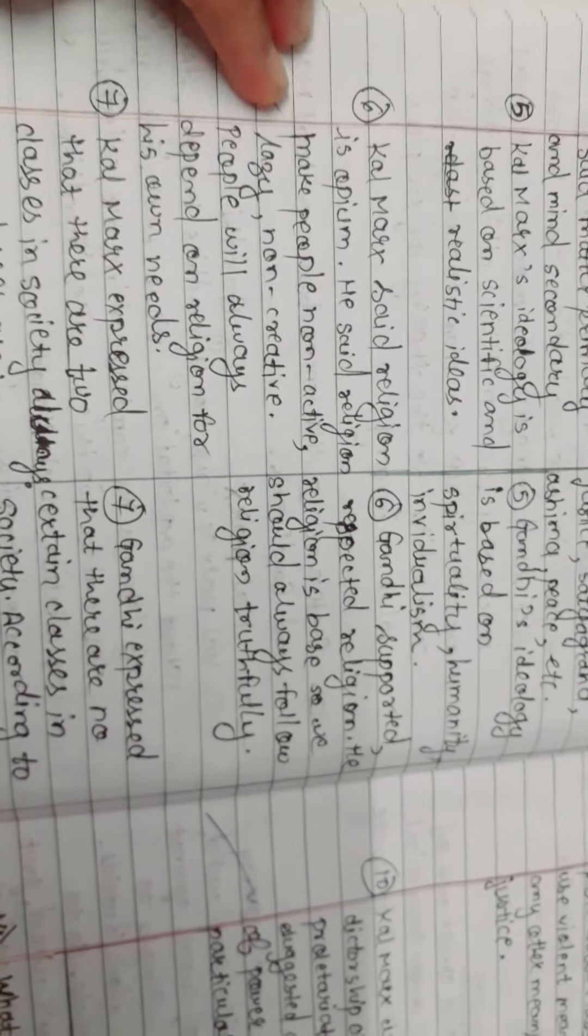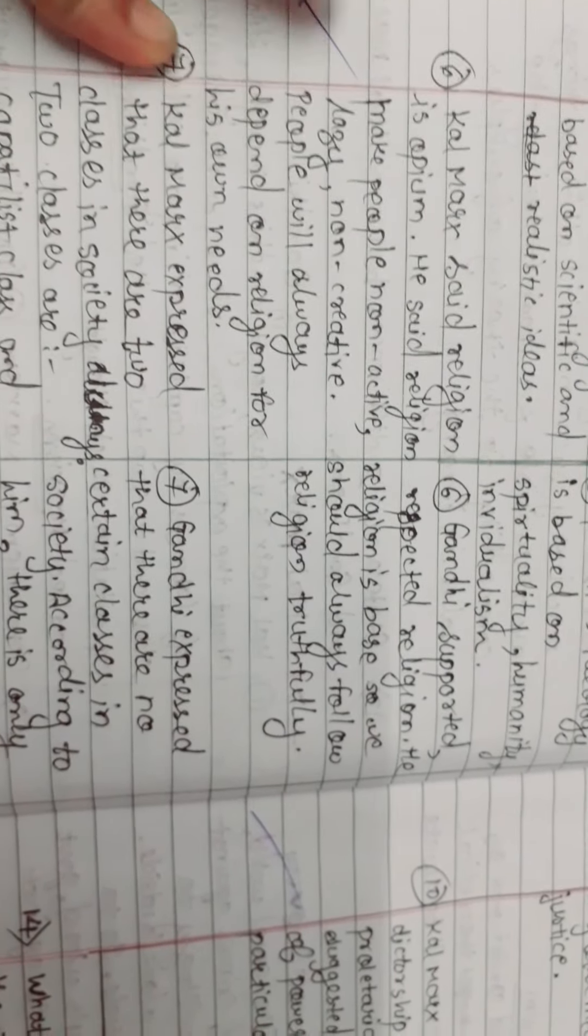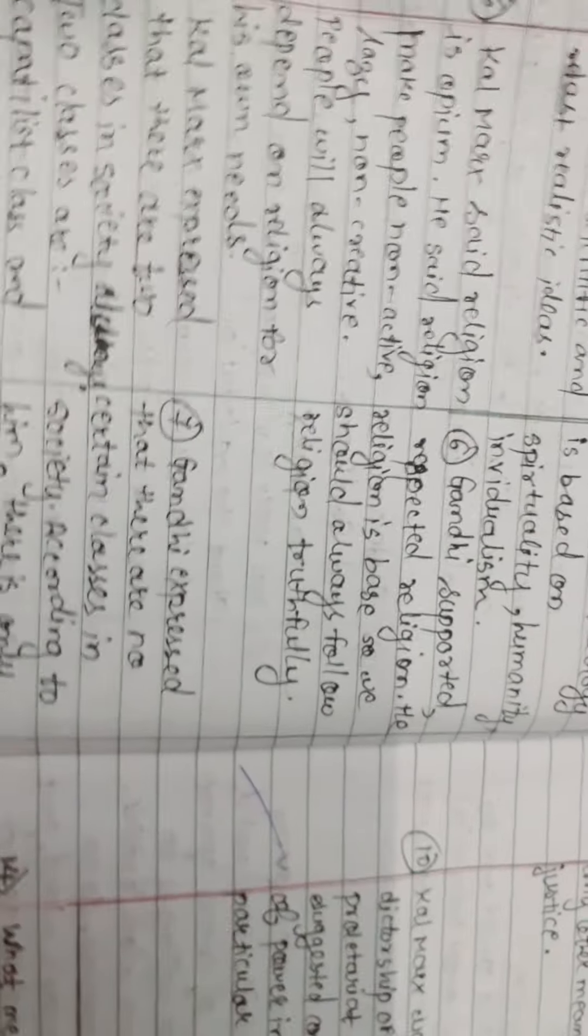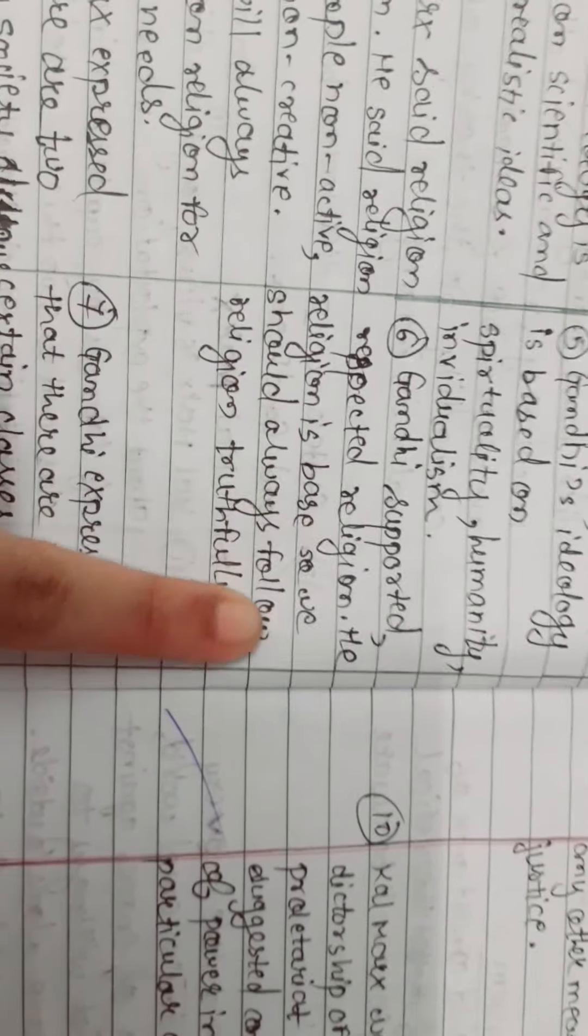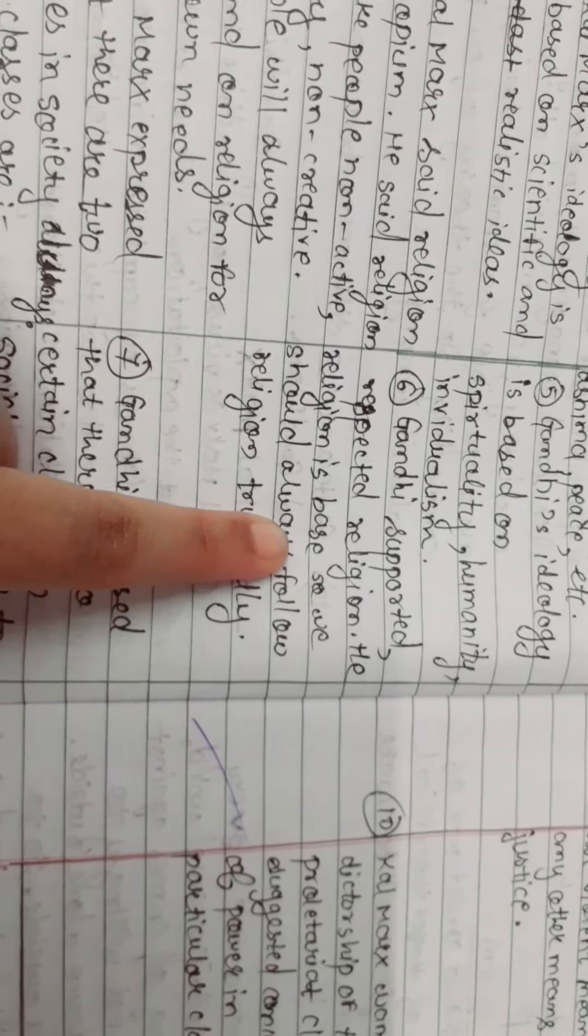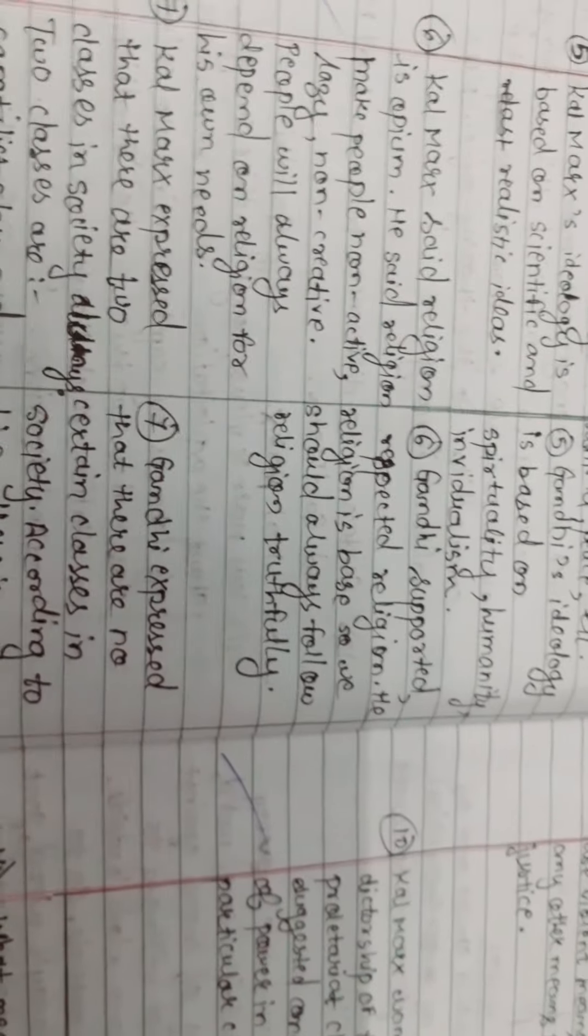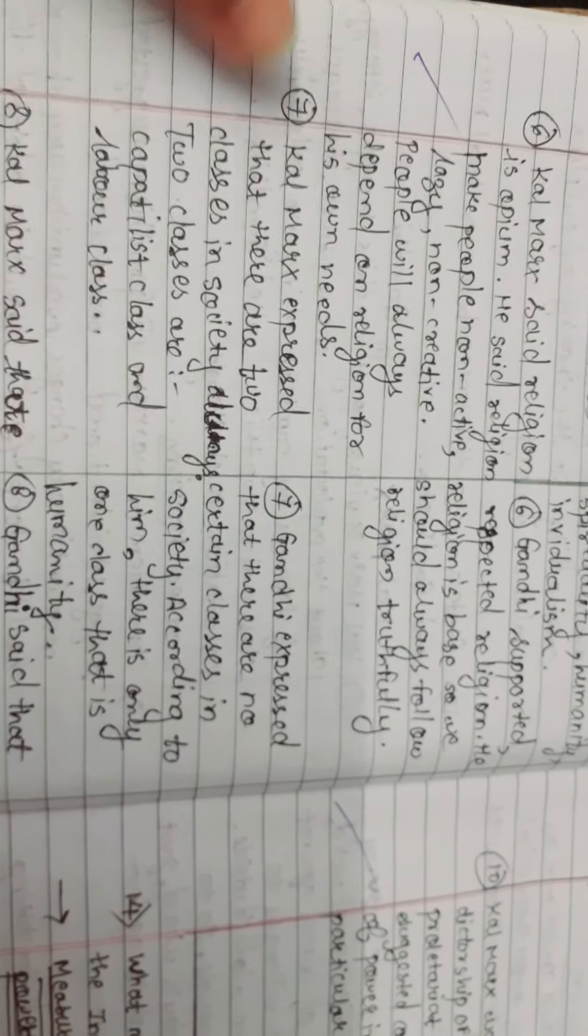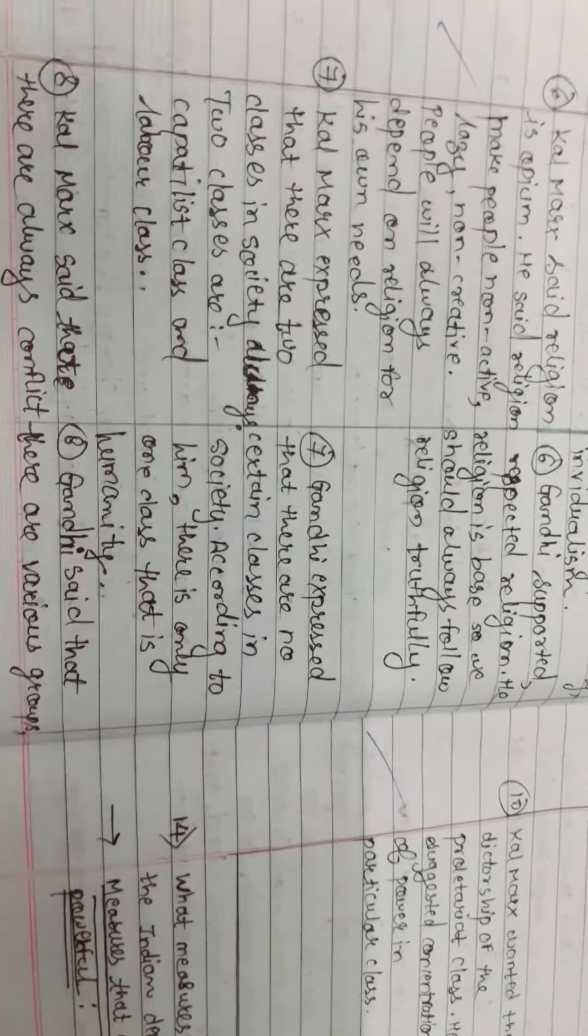Karl Marx said religion is opium. He said religion made people non-active, lazy, and non-creative. People will always depend on religion for their own needs. Gandhi believed, respected, and supported religion. He said that religion is a base, so we should always follow religion truthfully.